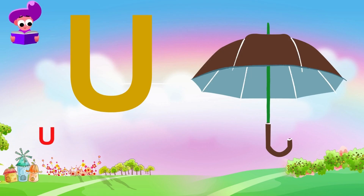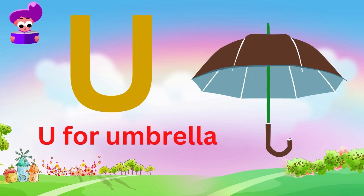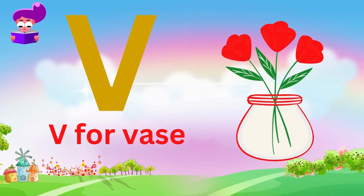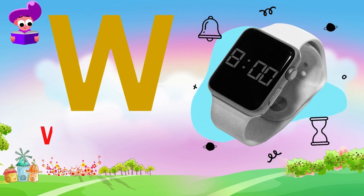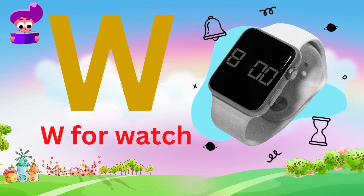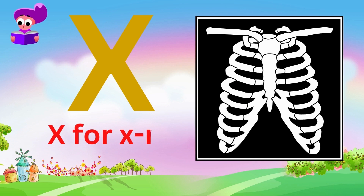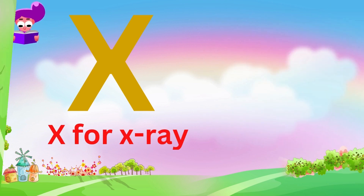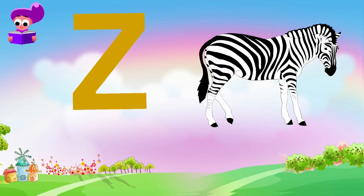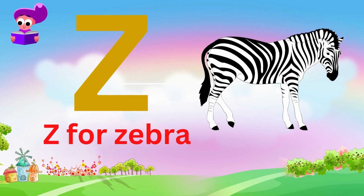U for umbrella, V for bus, W for watch, X for x-ray, Y for yarn, Z for zebra.